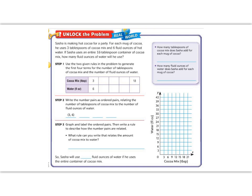Sasha is making hot cocoa for a party. For each mug of cocoa, he uses three tablespoons of cocoa mix and six fluid ounces of hot water. If Sasha uses an entire 18 tablespoon container of hot cocoa, how many fluid ounces will he need? Let's start with the purple box. How many tablespoons of cocoa does he need for each mug? Well let's go back and look into our unlock the problem.